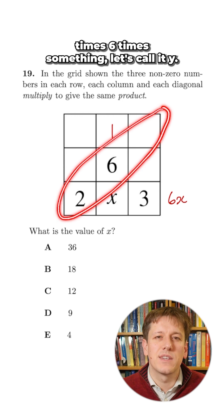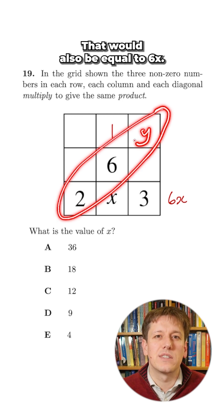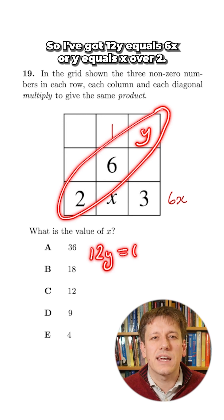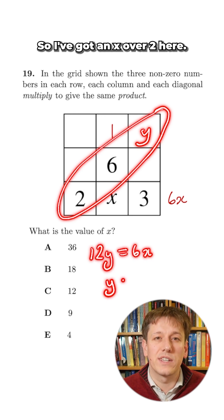On the diagonal here I've got 2 times 6 times something, let's call it y, that would also be equal to 6x. So I've got 12y equals 6x, or y equals x over 2, so I've got an x over 2 here.